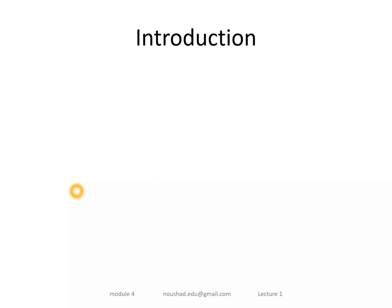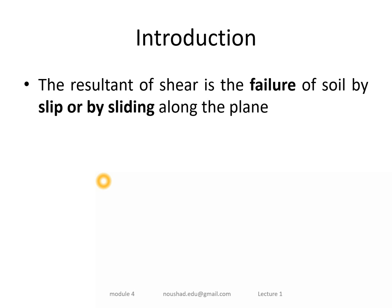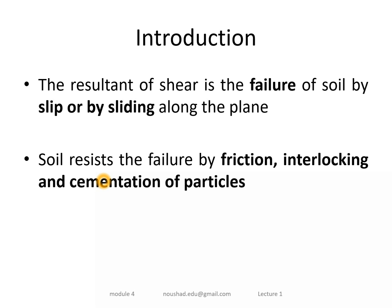A shear on the soil causes failure. The failure of the soil is to slip and slide. If the soil is to slip, it is resisted by interlocking, by friction, and by cementation — specifically particle-to-particle interlocking, particle-to-particle friction, particle-to-particle bonding, cementation, and gluing. This is the source of shear resistance in soil.